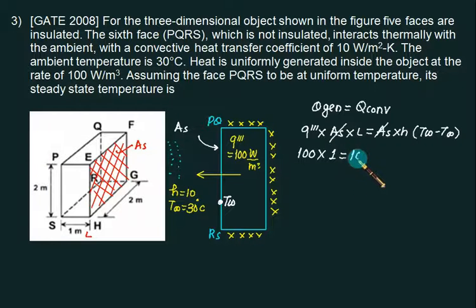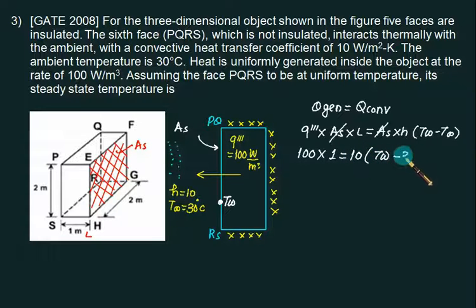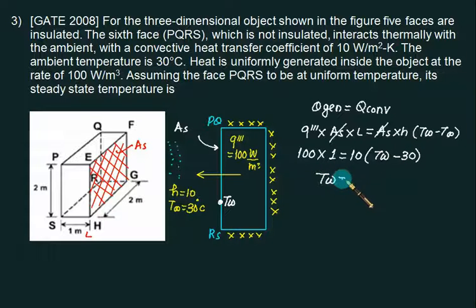Note that surface area cancels only in the case of a slab, not in the case of a cylinder. We don't know T_W, and T∞ equals 30°C. Solving, we get T_wall equals 40°C.